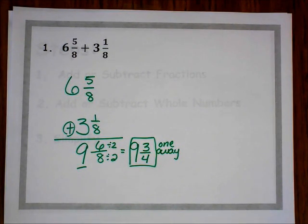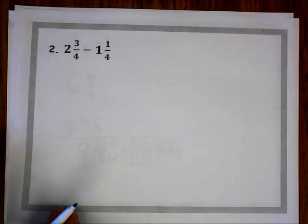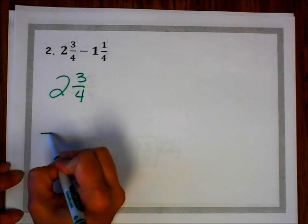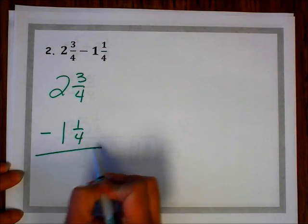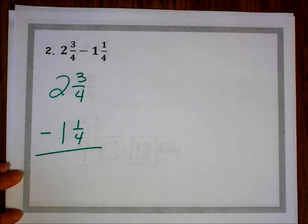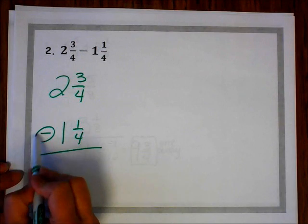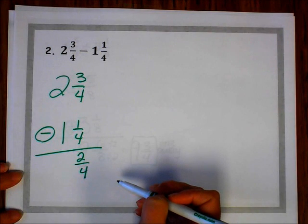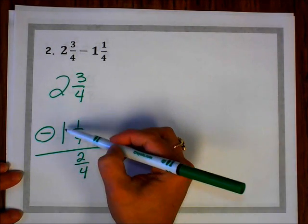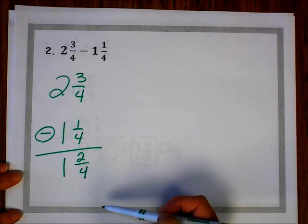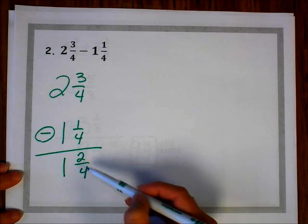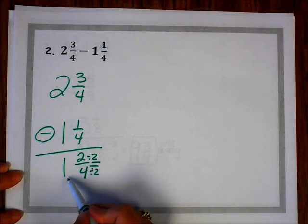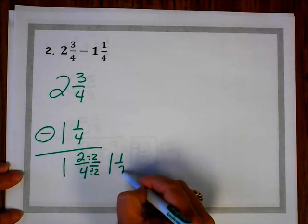Let's try a subtraction problem. We have 2 and 3 fourths minus 1 and 1 fourth. Notice my denominators are already the same, so I can start my subtraction. 3 fourths minus 1 fourth is 2 fourths. Now let's subtract our whole numbers: 2 minus 1 is 1. My last step is to see if I can simplify. Both of my numbers are even, so I can divide by 2. So 1 and 2 fourths simplifies to 1 and 1 half.